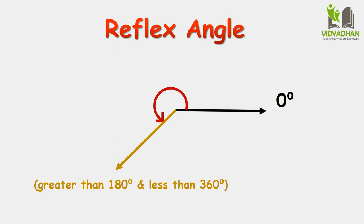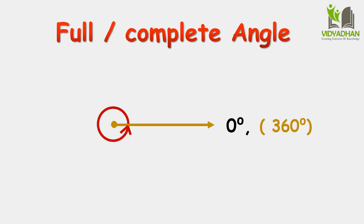Reflex Angle: A reflex angle is an angle whose measure is greater than 180 degrees but smaller than 360 degrees. Full Angle or Complete Angle: A full angle is an angle of one complete turn which is 360 degrees.